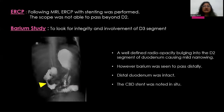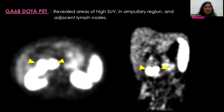Following MRI, ERCP with stenting was performed; however, the scope was not able to pass beyond D2. Barium studies were done to assess the integrity and involvement of the D3 segment, revealing a well-defined radio-opacity bulging into the D2 segment of the duodenum causing mild narrowing, but barium was seen to pass distally. Gallium DOTA-PET was also performed, revealing areas of high SUV uptake in the ampullary region and in the adjacent lymph nodes.